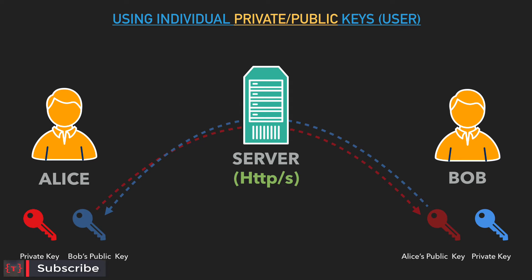The problem with this approach is that anyone at the server could obtain both Alice's and Bob's public keys and decrypt the messages they send. So using only public and private keys is not sufficient. We need a solution to generate a shared secret between Alice and Bob that does not pass through the server.